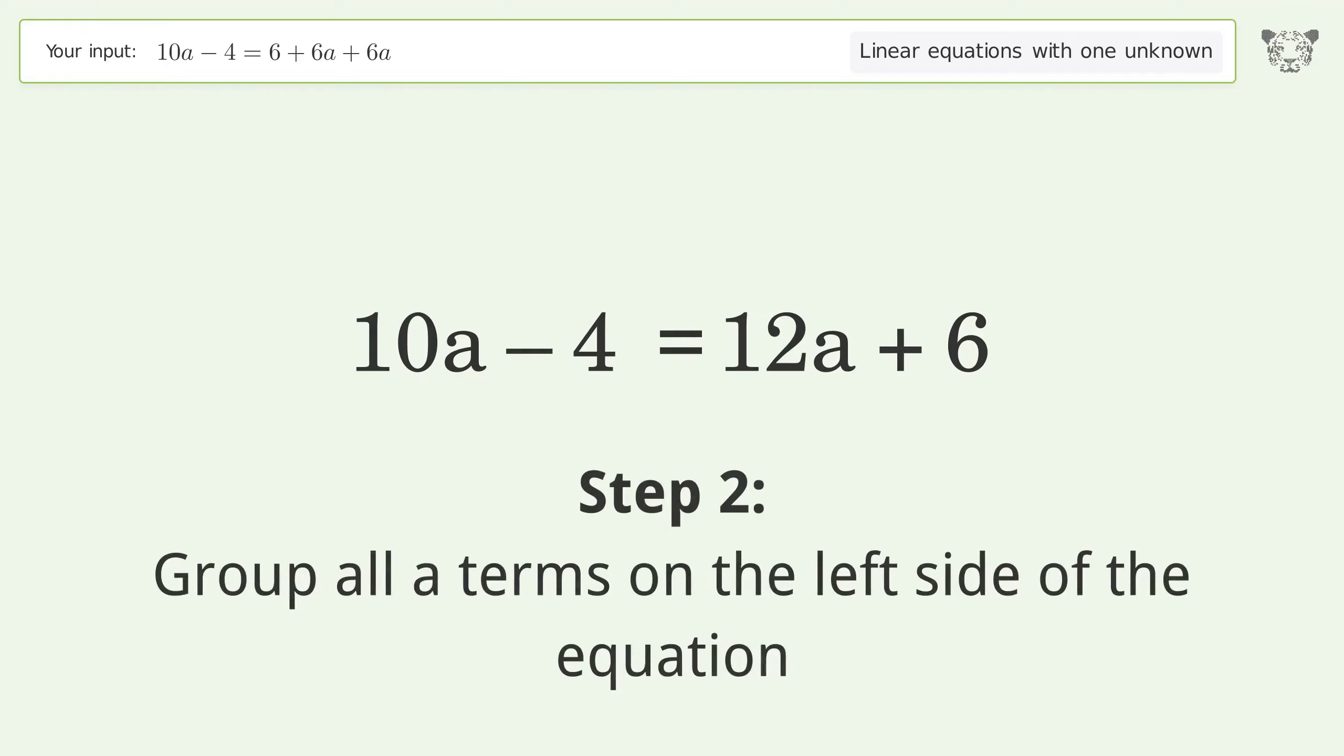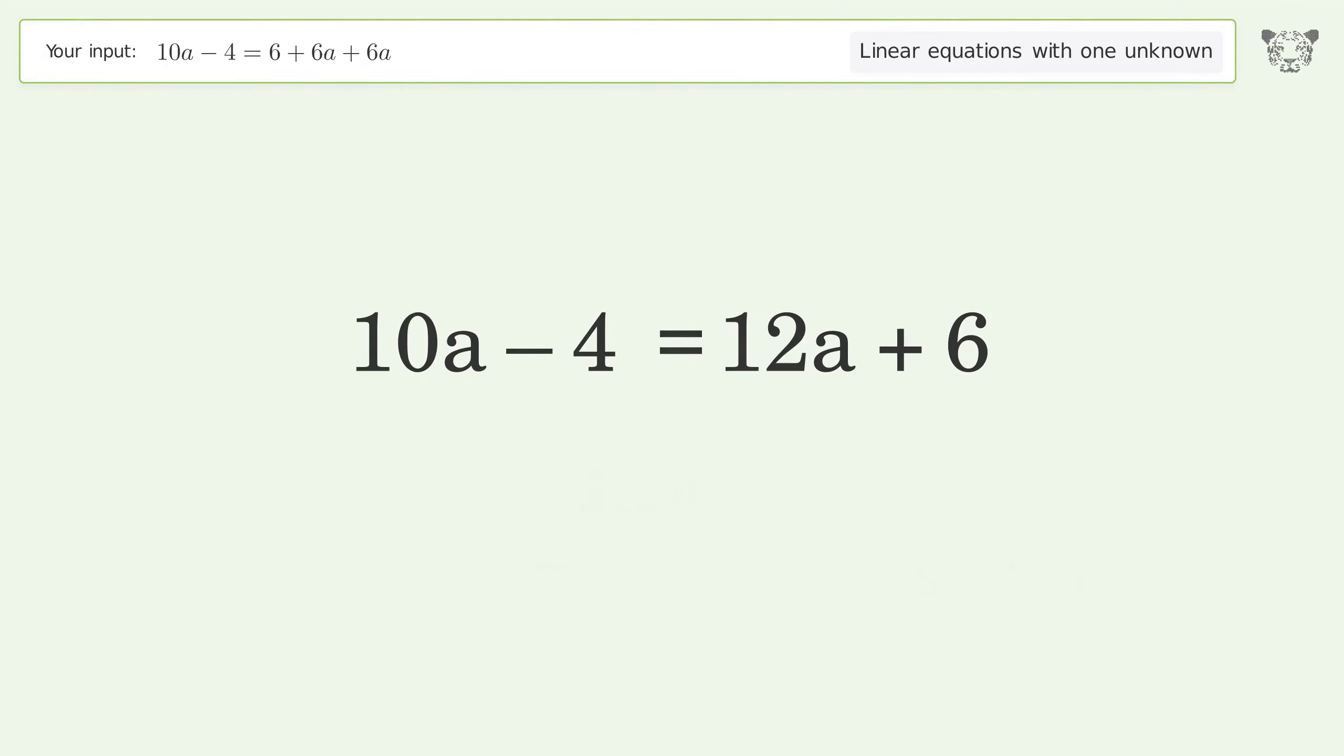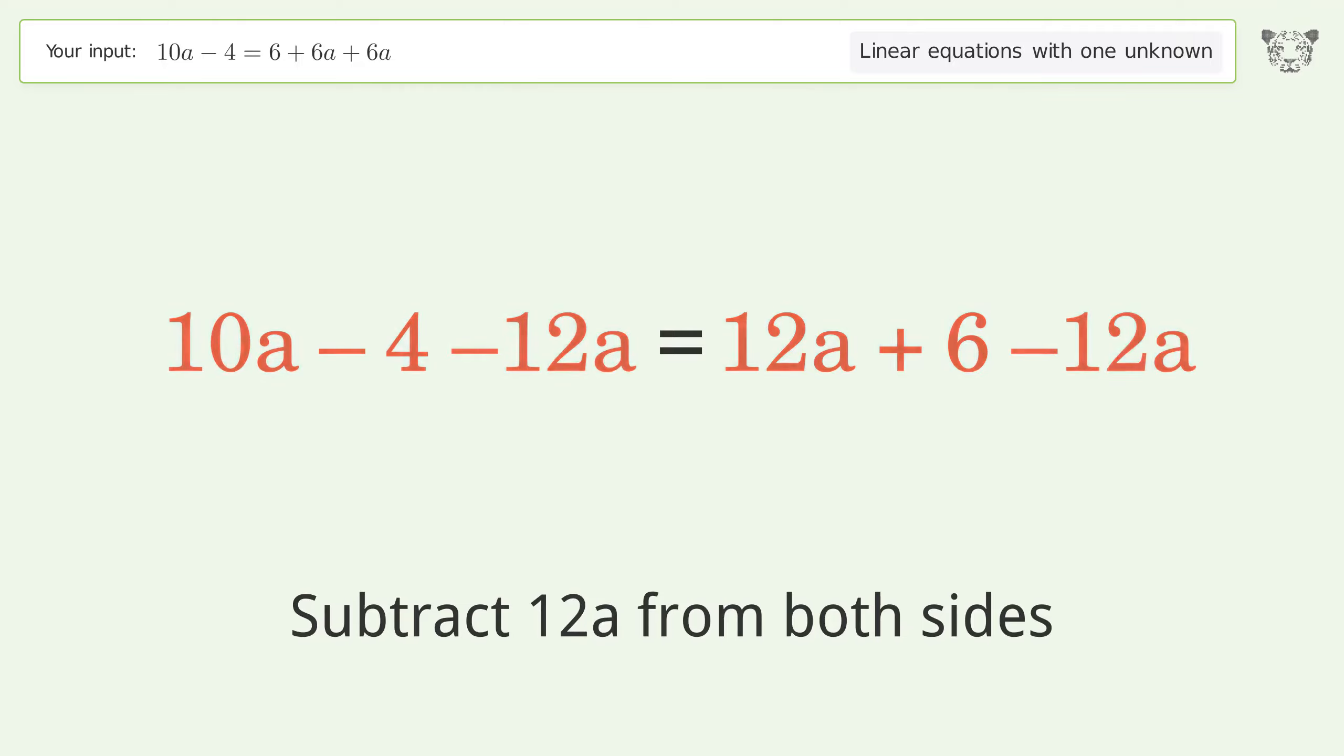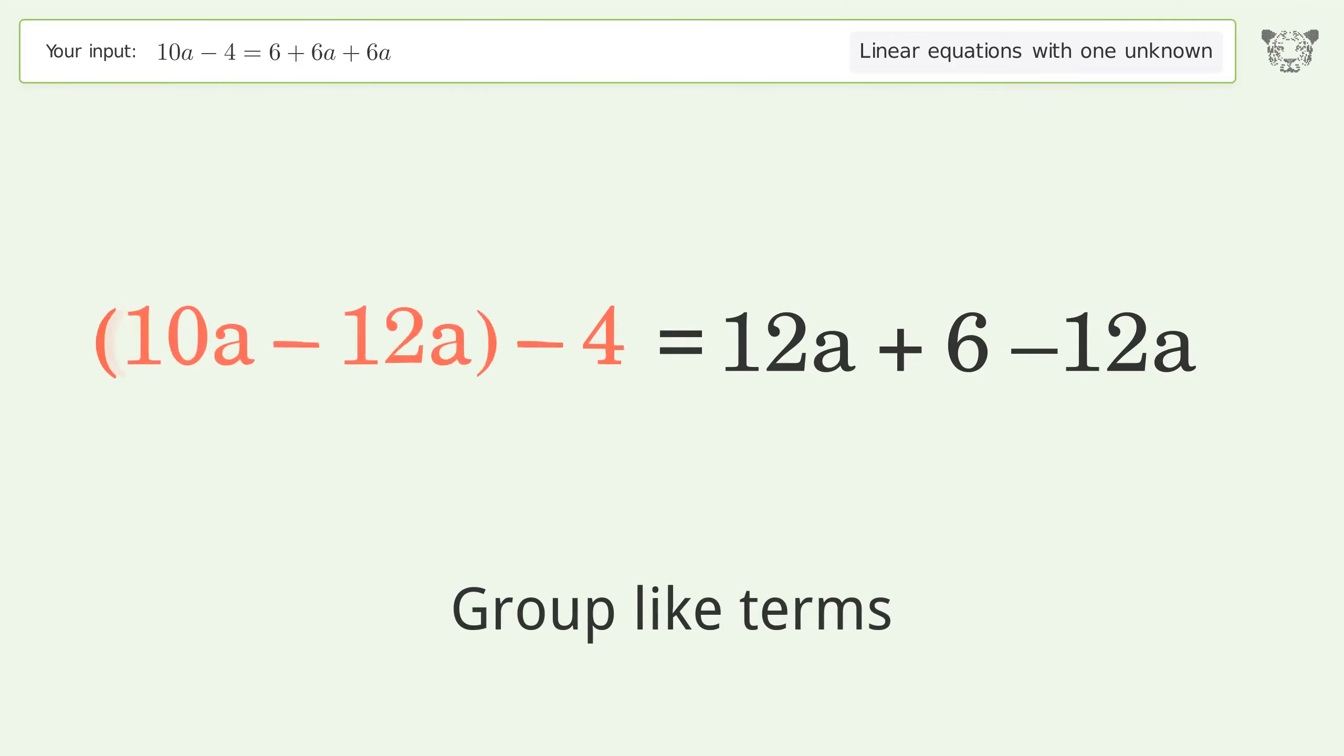Group all a terms on the left side of the equation. Subtract 12a from both sides. Group like terms and simplify the arithmetic.